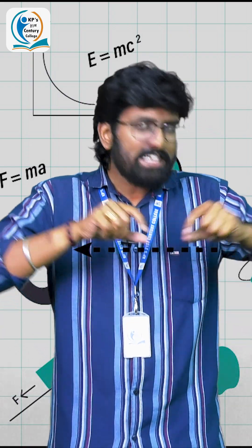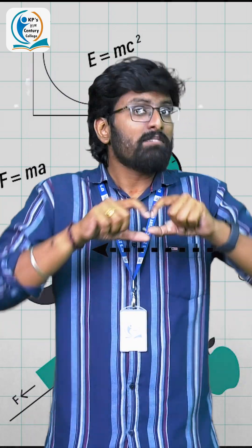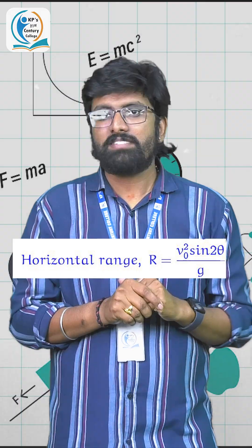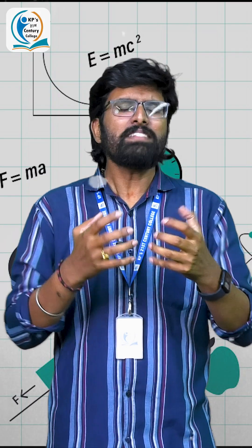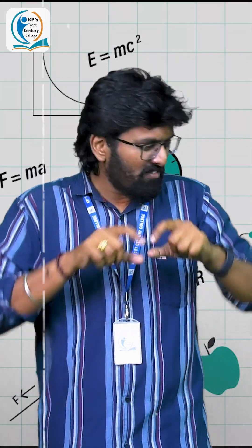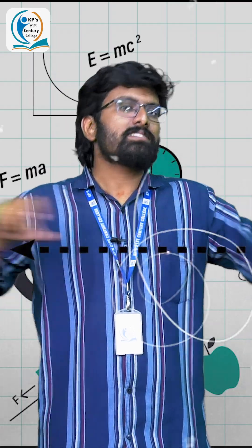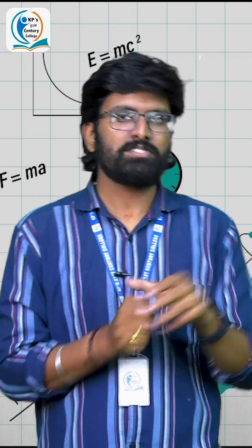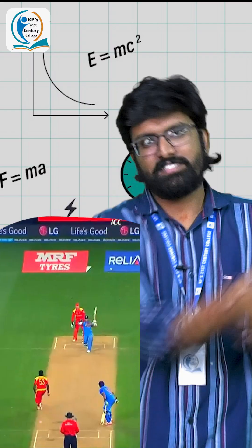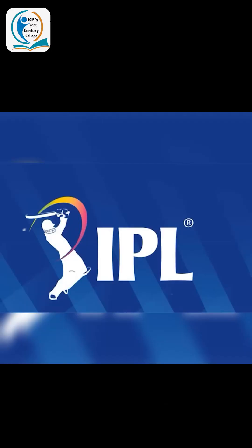And for finding the maximum length, it's nothing but range. u square sine 2 theta by g. So you can find the length of the longest six hit by the batsman. So this is the science behind hitting the six. Thank you.